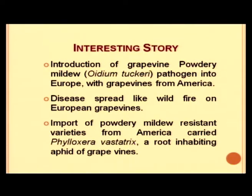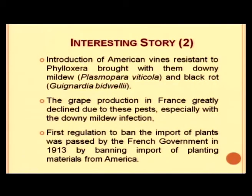To solve this problem, Europe tried to import powdery mildew resistant varieties from America, but unfortunately this brought another problem — Phylloxera vastatrix, a root-inhabiting aphid of grapevines. When they tried to deal with this aphid, yet another problem emerged: downy mildew Plasmopara viticola and black rot.